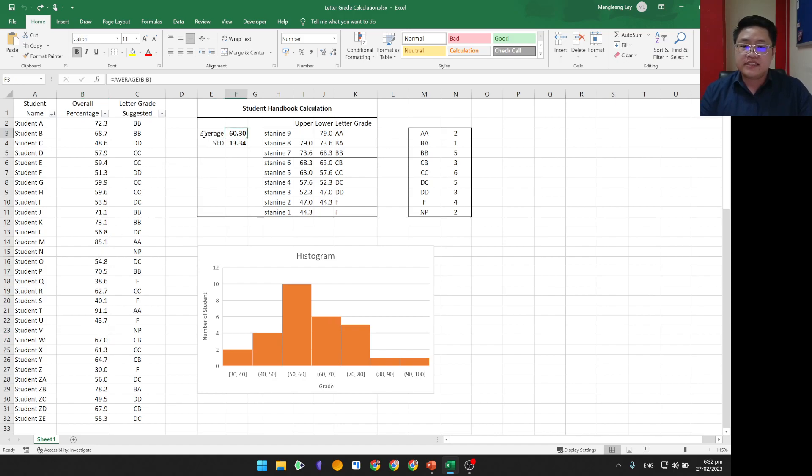Now, first, I would find the average of this class. So average of these percentages. And it's 60.3%. Then the standard deviation of this data set, it is 13.34. Now, if you recall earlier, the boundary to get AA or the threshold to get AA was average plus 1.4 standard deviation. In this case, it's equal to 79.0. So any student whose overall percentage is higher than 79.0, they'll get AA and so on. Now, let me sort this percentage.